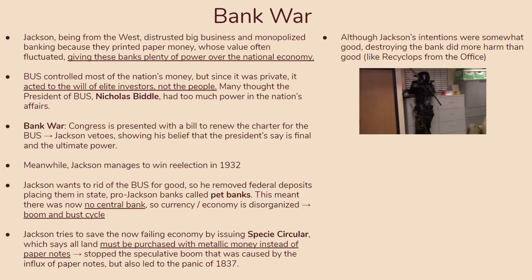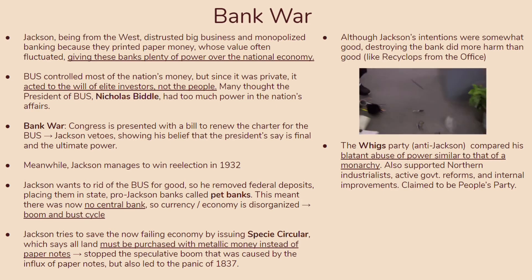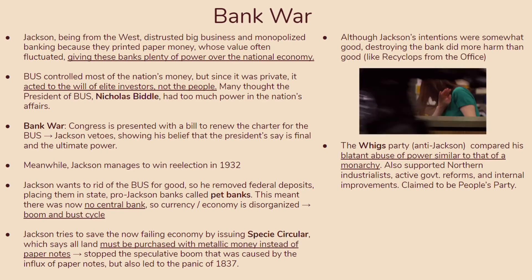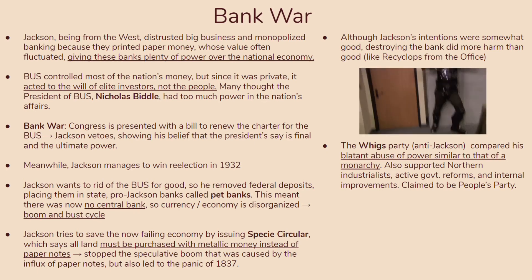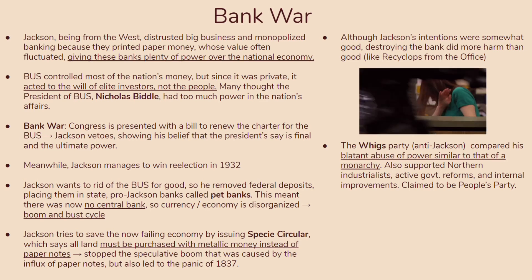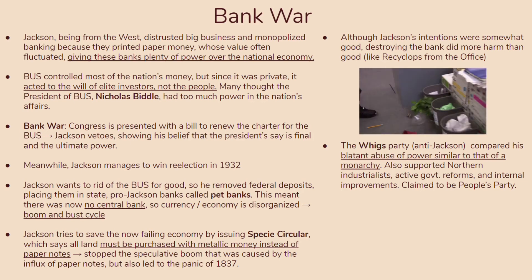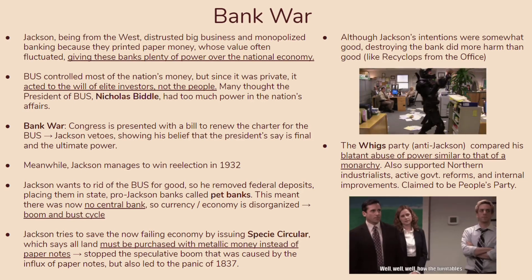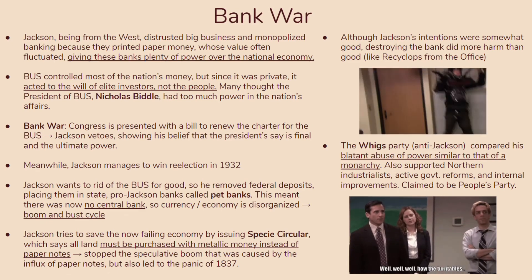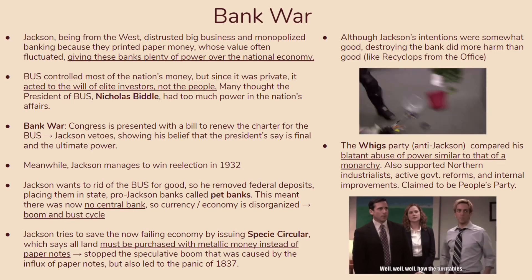During this time, a new party emerged known as the Whigs. These were anti-Jacksonites who compared his blatant abuse of power to that of a monarchy, evoking feelings of a British crown that people were taught to despise. They also supported Northern industrialists, active government reforms, and internal improvements, and claimed to be the People's Party — arguing that Jackson wasn't for the people but was working directly against them, turning the tables on the Jacksonites.